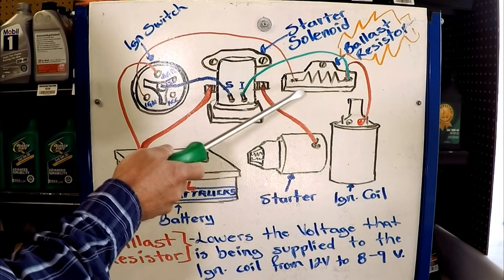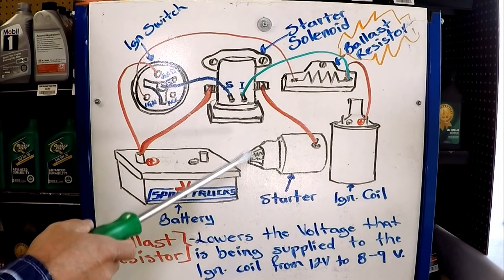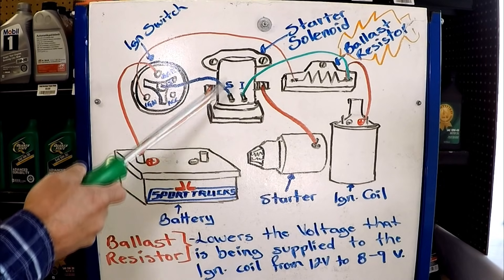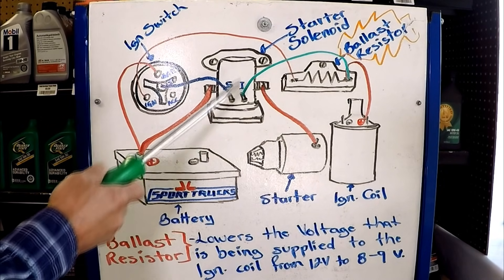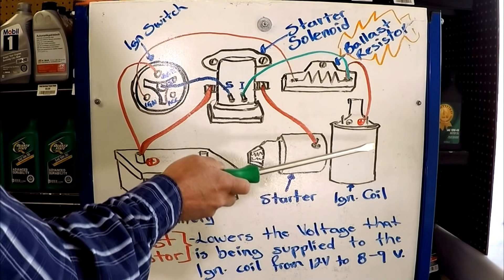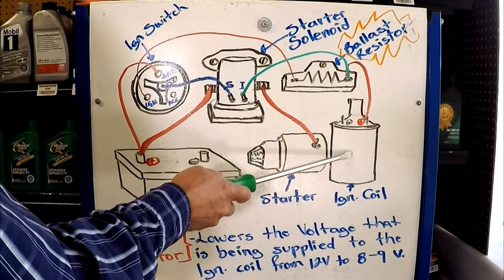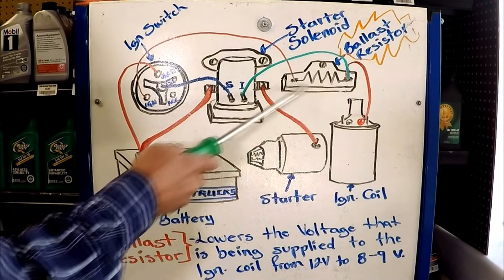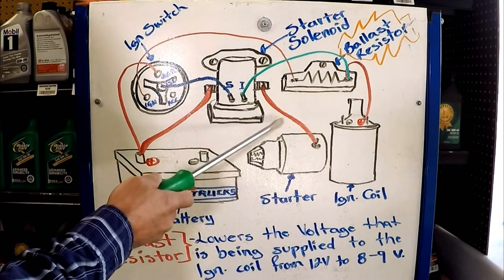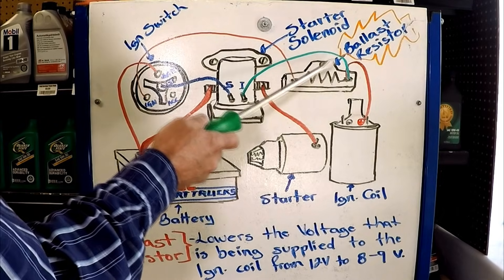Now another main reason why there is a ballast resistor on those early model vehicles is because when the vehicle starts, your alternator is going to put an output of anywhere from 13.5 to 14 volts. And that's even after it is regulated. So putting 13.5 to 14 volts to an ignition coil would definitely fry it. And not only it would fry the ignition coil, but that current would also affect the points. So even the points would get burned faster. So the ballast resistor makes up for that. That way the ignition coil doesn't get the 13.5 volts.